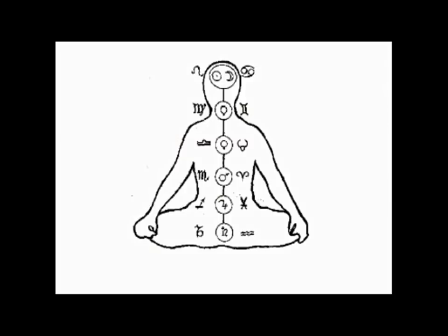For example, if you had planets in Aquarius in your birth chart, they would affect the base chakra along with the Saturn-ruled signs. Planets in Cancer or Leo would be in the head, in the third eye, and so on. That's just a hint regarding the theory of how it could potentially be applied in practice if one had the correspondences right.